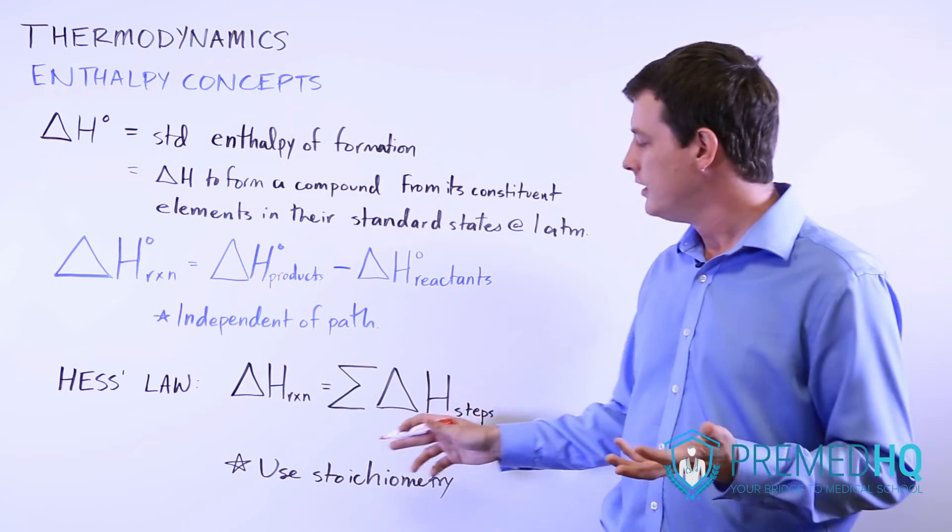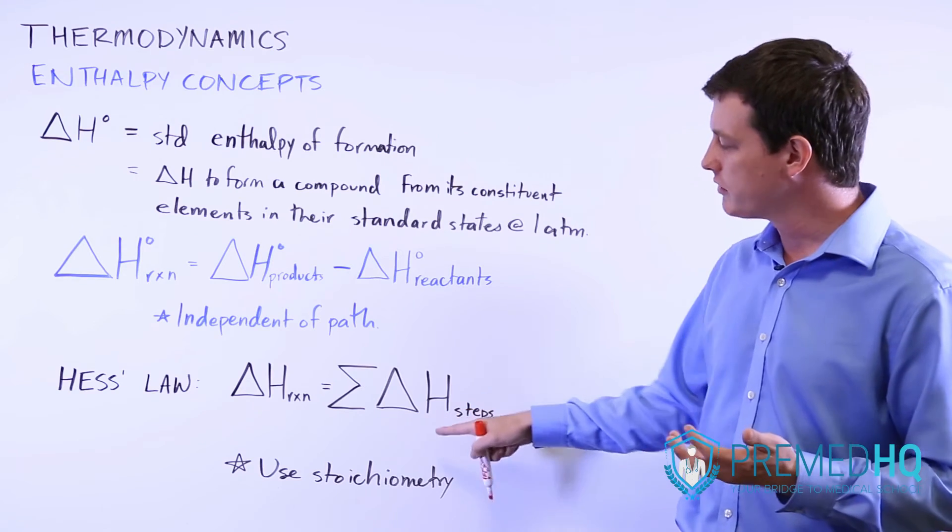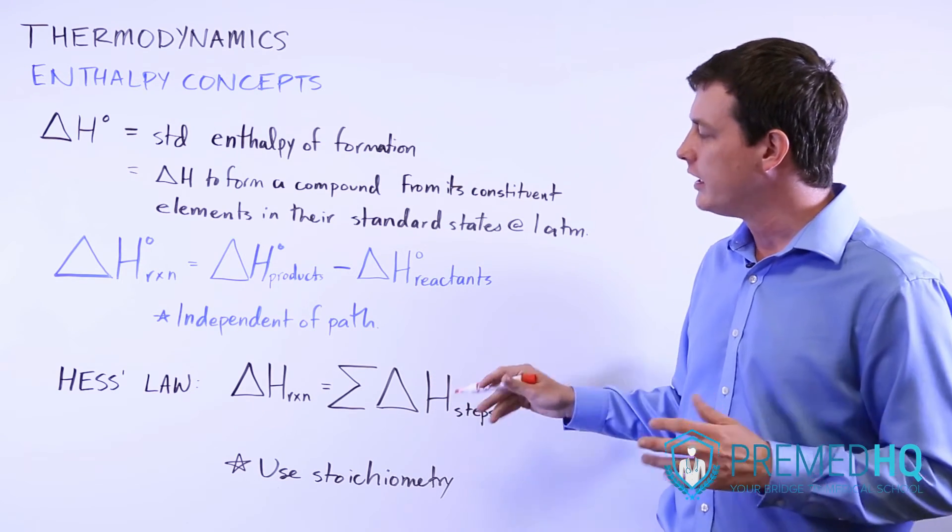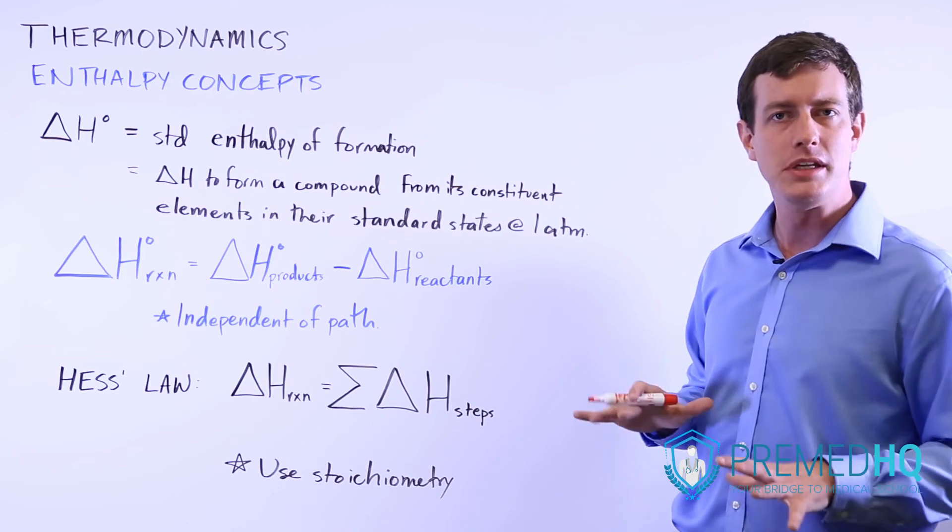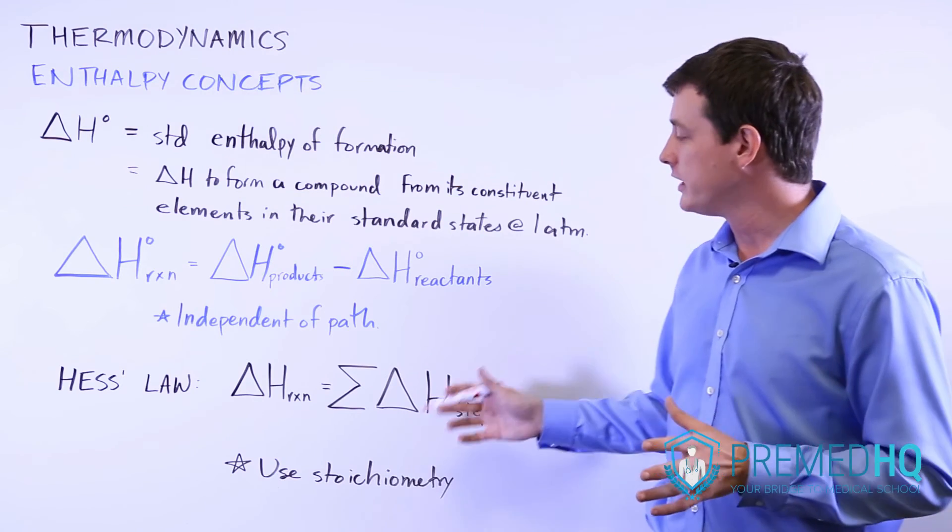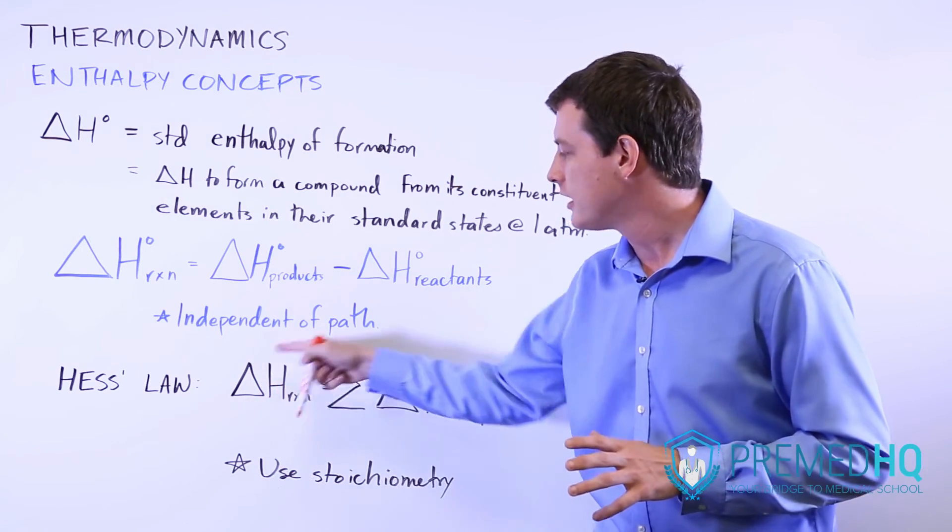However, with Hess's Law, if a step happens twice or three times you have to multiply that by three in order to account for all the enthalpy changes. And ultimately, if you can figure out the total change in enthalpy of the reaction, that can help you figure out the enthalpies of perhaps an unknown step.